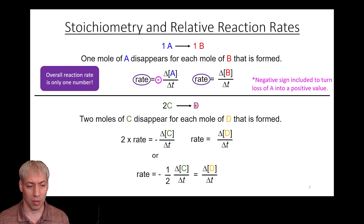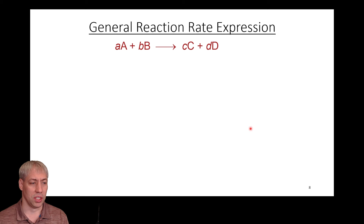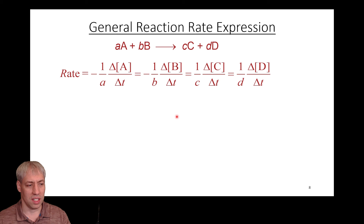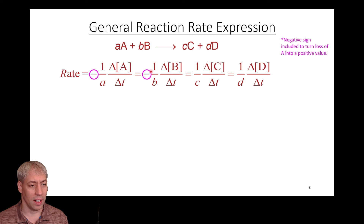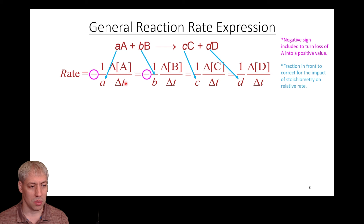For the general expression aA + bB → cC + dD, there is only one overall rate for the reaction, which is always positive. Species that disappear have a negative sign, and the stoichiometric coefficients appear as denominators: rate = negative (1/a) delta[A]/delta t = negative (1/b) delta[B]/delta t = (1/c) delta[C]/delta t = (1/d) delta[D]/delta t. If there's a coefficient of two in front of a species, that species goes away twice as fast, and we divide by two to get the overall rate.